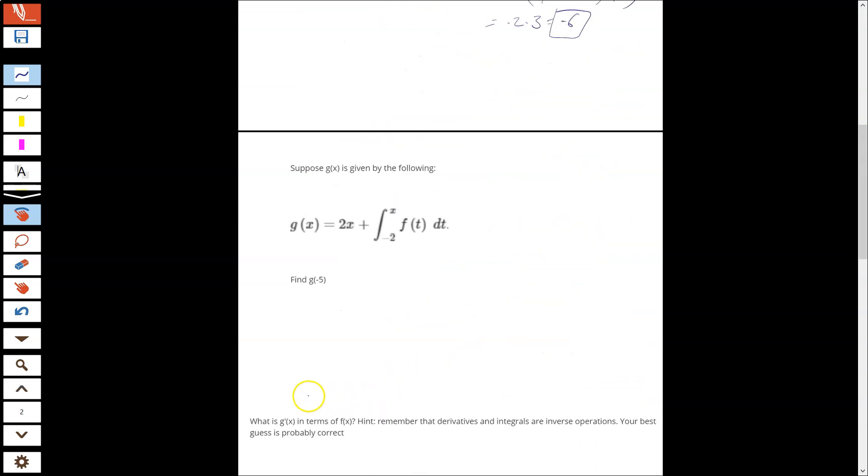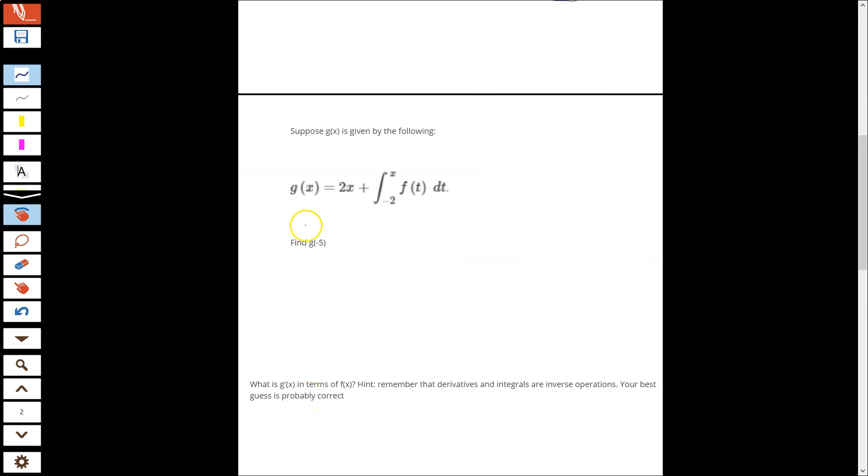Okay, my next question is on the same graph, but we're given this function now. So g(x) is 2x plus this integral from negative 2 to x. Sorry about the noise. Negative 2 to x of f. So what this means, g(-5) means I plug in negative 5 wherever I see an x, just like we've always done. So I want the integral from negative 2 to negative 5 of f(t)dt.